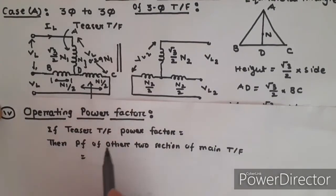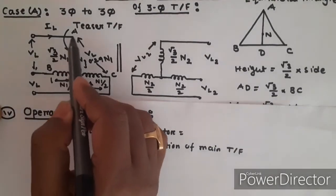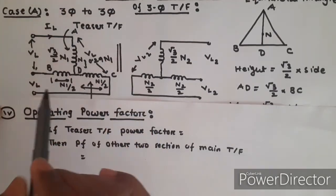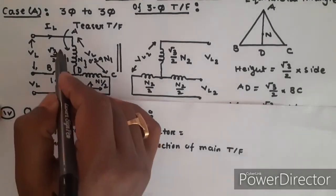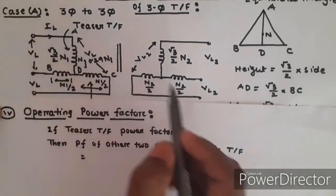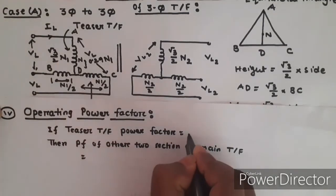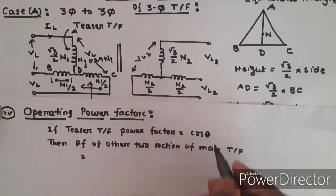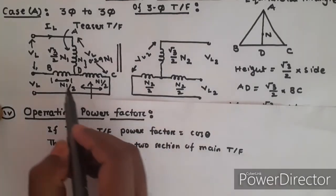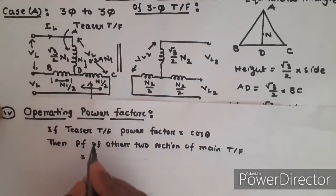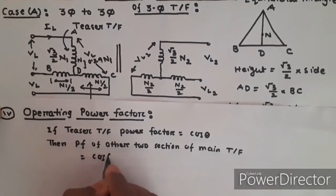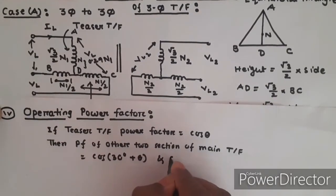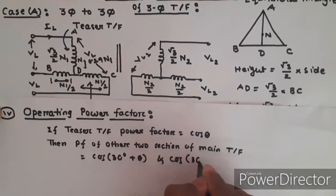What is the operating power factor? The operating power factor of the teaser transformer and the two sections of the main transformer will be different. If the load power factor is cos theta, the operating power factor of the teaser transformer differs from that of the two sections of the main transformer.